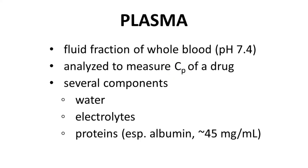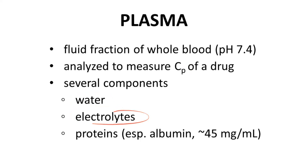Plasma consists of a number of components, including water, electrolytes, and proteins. The main protein in plasma, although there are many, is albumin. Albumin is 4-5% of plasma on a mass-to-volume basis.